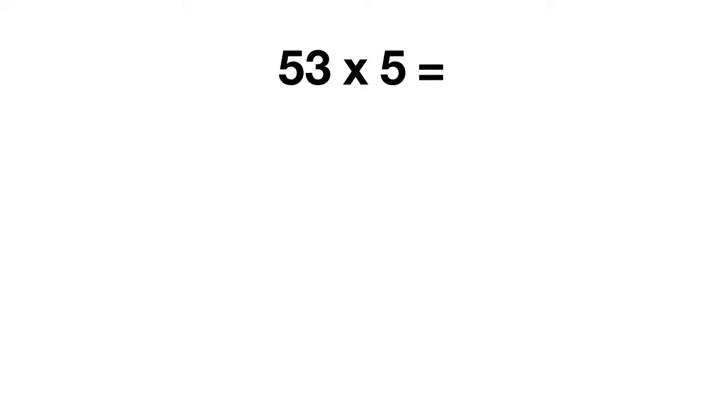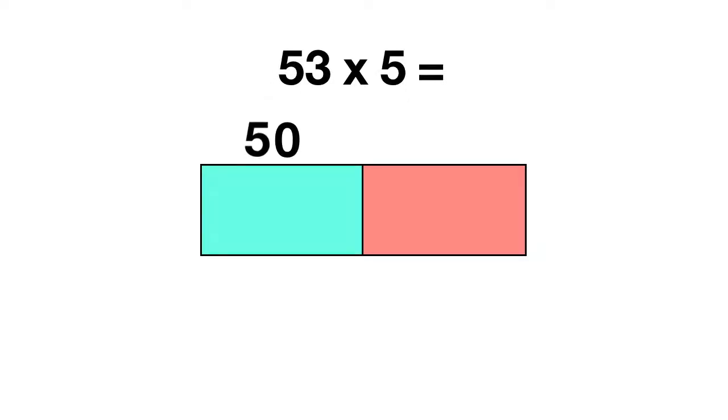Well to do this with an area model, we'll start by breaking up the number into these two boxes. The 5 in 53 represents 5 tens, or a value of 50. The 3 is 3 ones and has a value of 3. Now we're multiplying all of this by 5, which just has a value of 5.